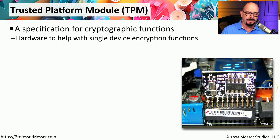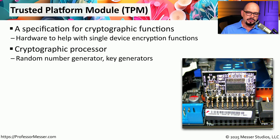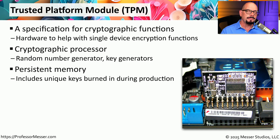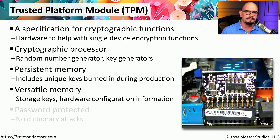The TPM is a standardized piece of hardware built for encryption, with many different cryptographic functions. It can be a module installed separately onto the motherboard, or built directly into the motherboard itself. The TPM includes a cryptographic processor, enabling random number generation and cryptographic key generation. It also includes persistent memory containing burned-in keys created during manufacture, and versatile memory that can store keys and other information within the TPM.